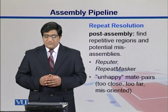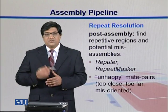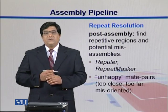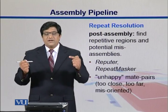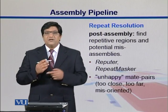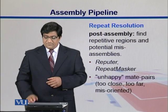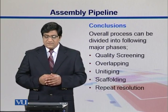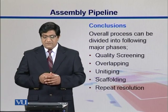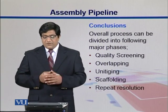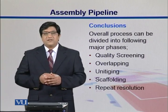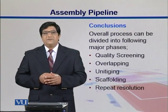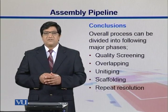In post-assembly, you can find repetitive and misassembly regions and resolve them by comparing paired-end reads — checking whether their distances and orientations are consistent. Overall, the assembly process is divided into phases: quality screening, overlapping, unitigging, scaffolding, and repeat resolution, which remains a big challenge for these assemblies.